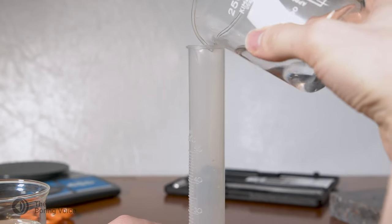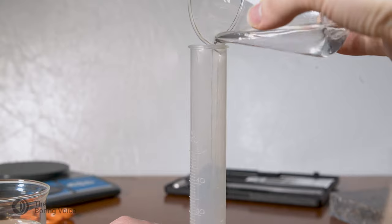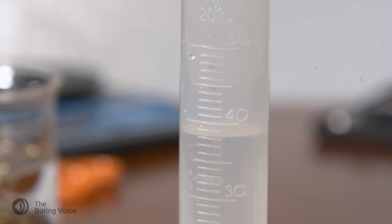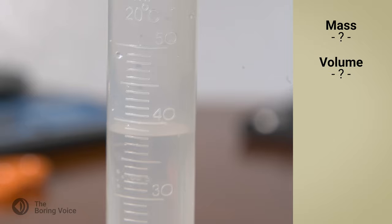The water remaining in my first beaker represents the displaced volume of the object. I will measure this in my graduated cylinder. The object displaces 38 milliliters of water from the original 175 milliliters. That means my object has a volume of 38 milliliters.